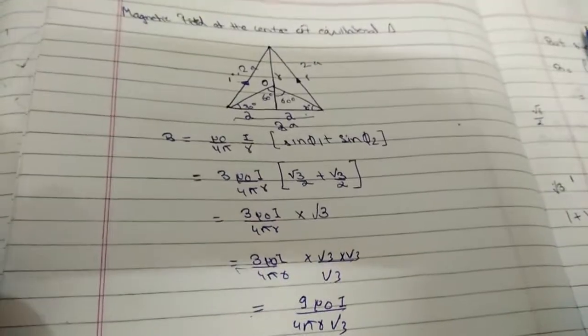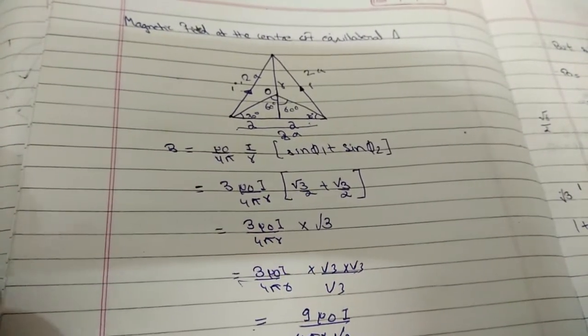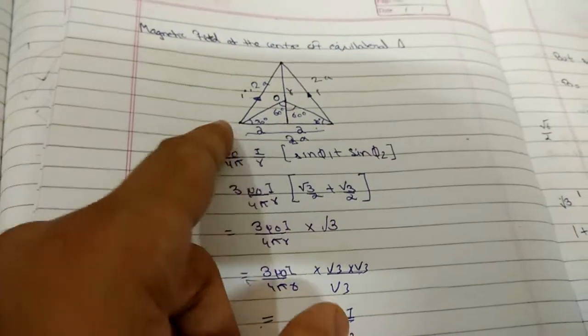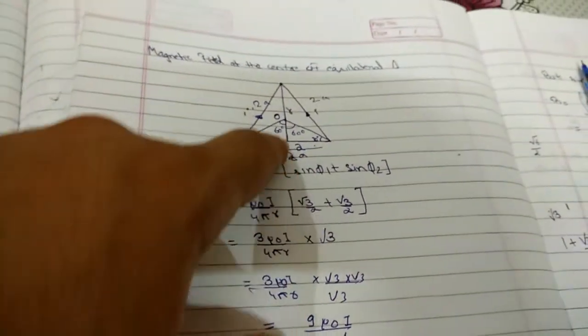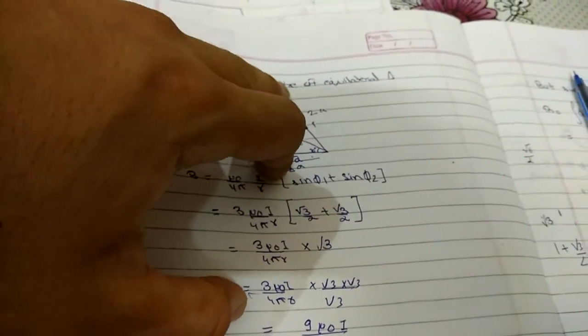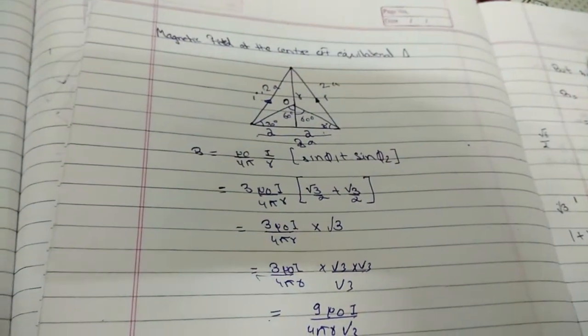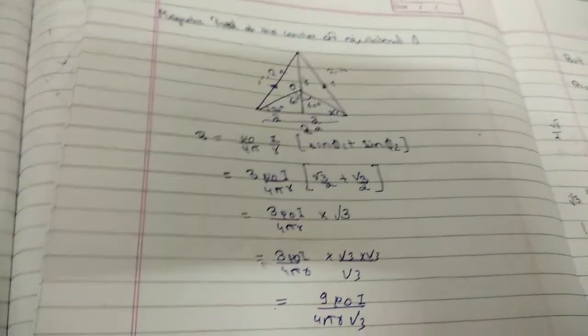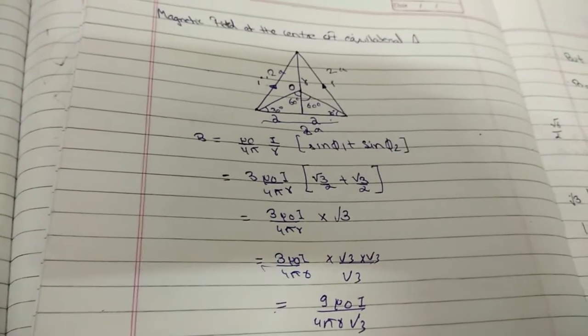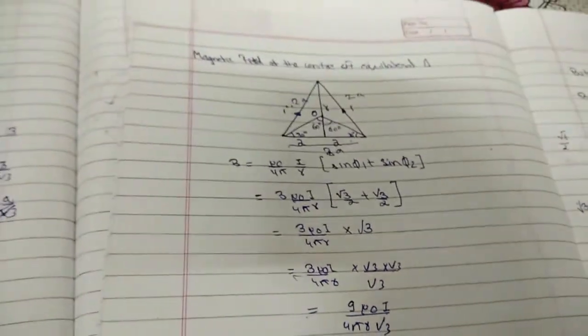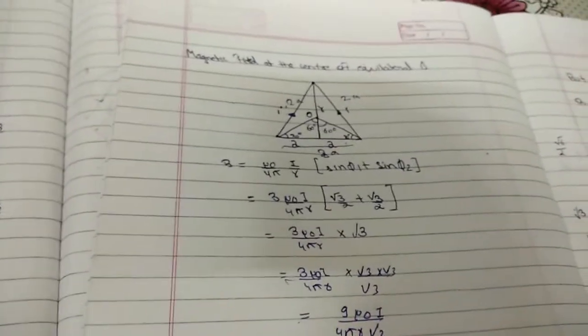Once again I am repeating: magnetic field at center of equilateral triangle. We have made an equilateral triangle whose each side is 2a and made a perpendicular distance r from the center. By Biot-Savart law for finite charges, the formula is μ₀i/4πr [sin φ₁ + sin φ₂], so 3 times μ₀i/4πr [sin 60° + sin 60°].